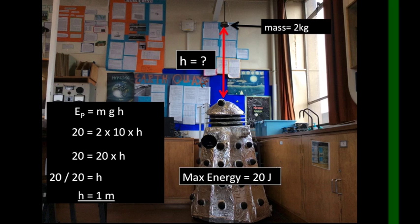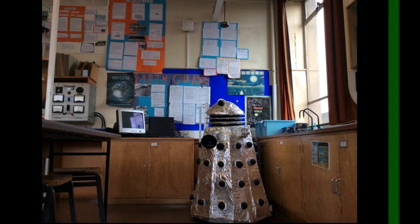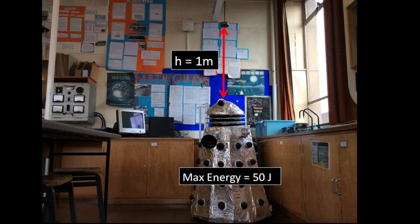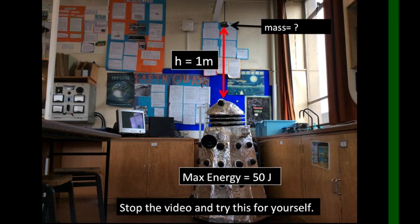That means if we have more than 1 meter we break the shields, less than 1 meter we don't. Here's another example, one you can have a look at. Let's say we have a slightly less pathetic Dalek, one with shields that can absorb up to 50 joules of energy. We're going to drop our mass from the same height as before, 1 meter, and my question for you is how much mass do we have to drop in order to break through the new shields?